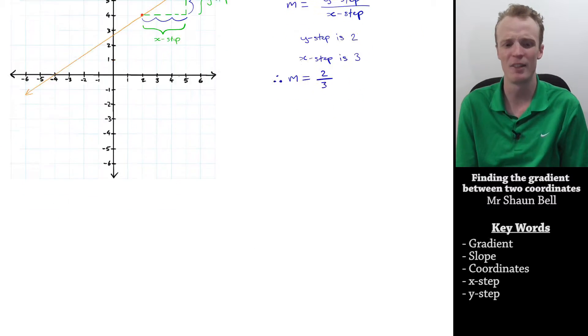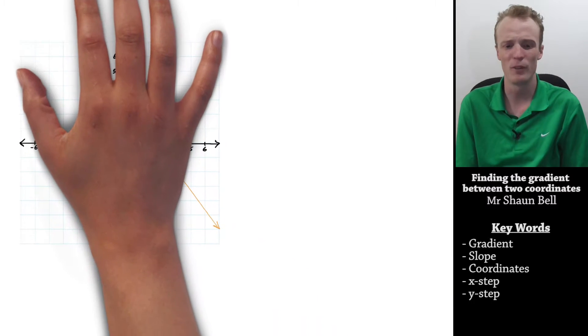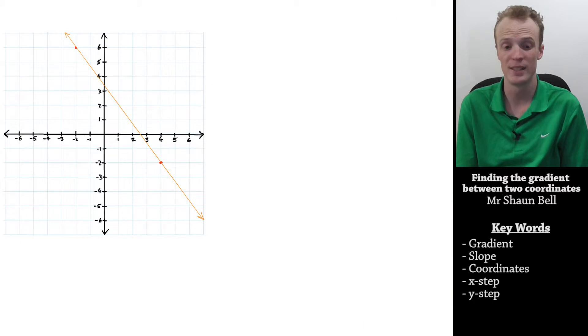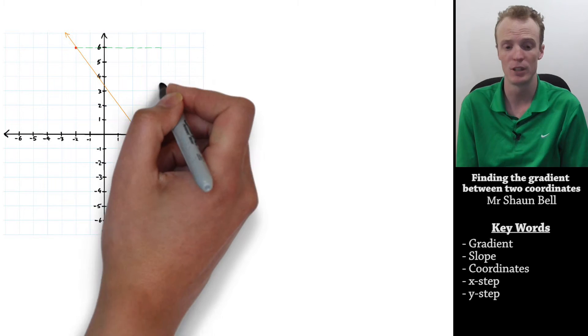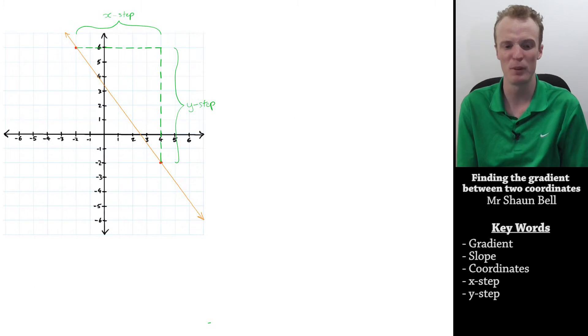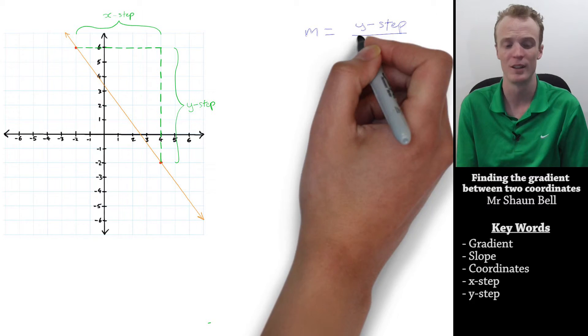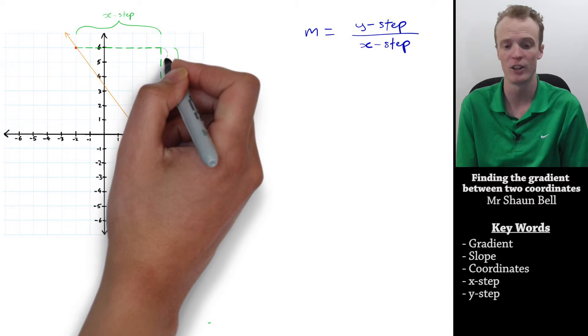Let's take a look at another example. Here we've got the coordinates negative 2, 6, and 4, negative 2. We can do the same thing here, and break this journey between the two coordinates in the x and y direction.